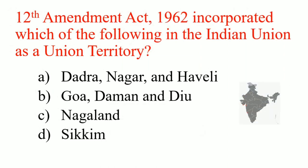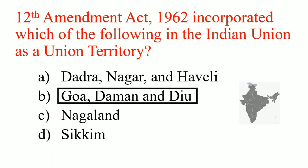The 12th amendment act 1962 incorporated which of the following in the Indian Union as a Union Territory? Answer: Goa, Daman and Diu.